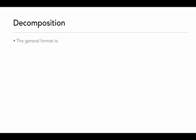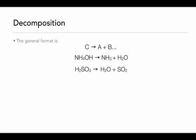Decomposition reactions are basically just the opposite. Instead of ending with one product, we're going to start with one reactant and that reactant is going to break apart into two or more products. Ammonium hydroxide will decompose into ammonia and water. Hydrogen sulfite will decompose into water and sulfur dioxide. Hydrogen peroxide will decompose into water and oxygen gas — you would need two hydrogen peroxides to balance that reaction, producing two waters and one oxygen gas.